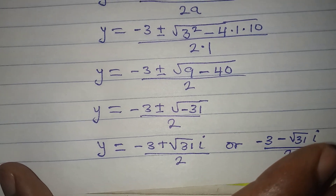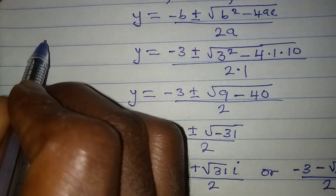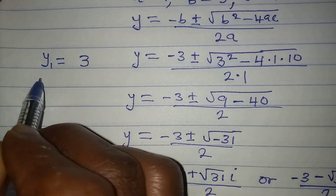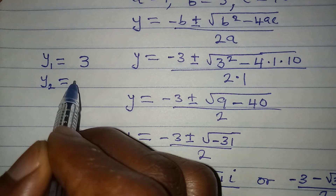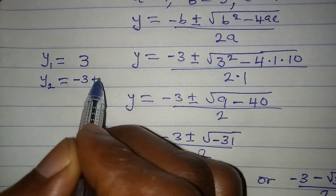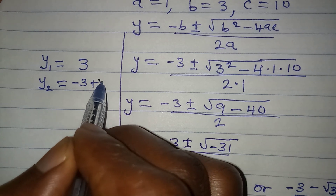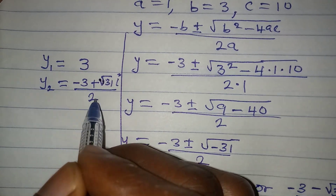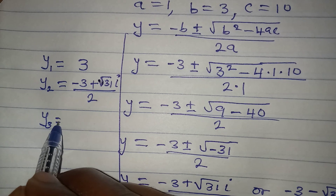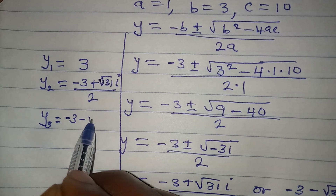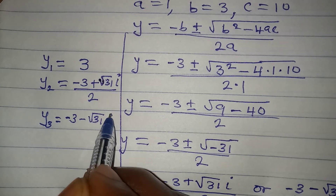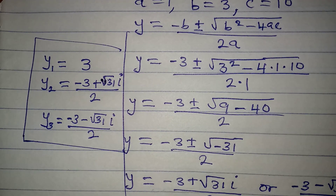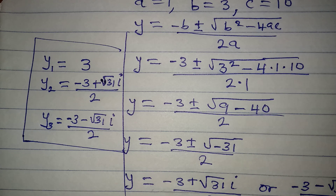Bringing the three solutions together: y₁ equals 3; y₂ equals (minus 3 plus i√31) over 2; y₃ equals (minus 3 minus i√31) over 2. These are the three values of y for the equation. Thank you for watching.